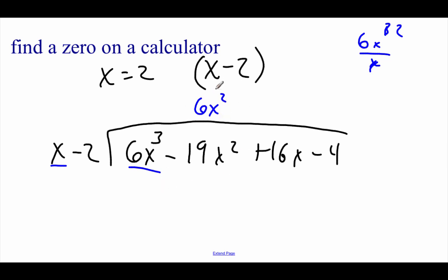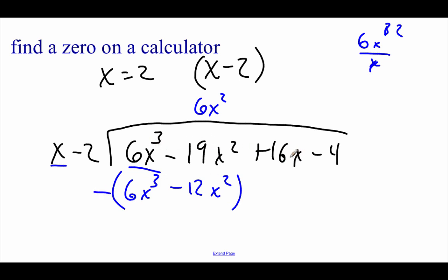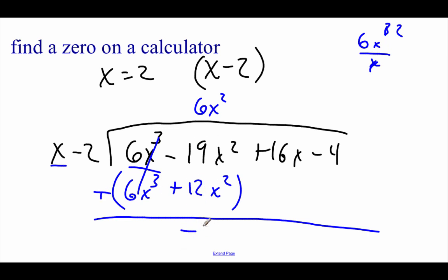Now we need to take this 6x squared times x minus 2. So 6x squared times x gives us 6x cubed, and 6x squared times negative 2 gives us minus 12x squared. Now we want to subtract this from our big polynomial up top. The first two terms cancel out: 6x cubed minus 6x cubed. If we take negative 19x squared and subtract negative 12x squared, that's a double negative — like adding 12x squared — so we end up with negative 7x squared. Then I carry down the rest: 16x and minus 4.